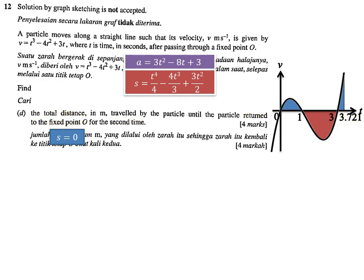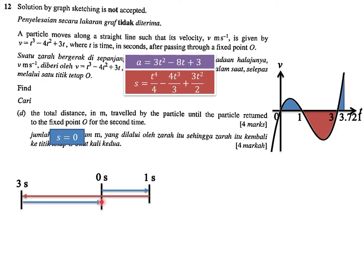This method is quite complicated. An easier approach is to draw a diagram. Starting from the origin, the particle moves right until t = 1 second, then stops and turns left. It moves left until t = 3 seconds, stops again, then moves right. It passes through the origin for the first time at t = 1.613 seconds and returns to the origin for the second time at t = 3.721 seconds.